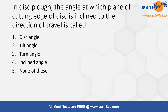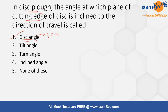Next: in disc plough, the angle at which the plane of cutting edge of disc is inclined to the direction of travel is called — options are disc angle, tilt angle, turn angle, incline angle, or none of these. The correct answer is disc angle. Also, this disc angle ranges from 40 to 45 degrees.